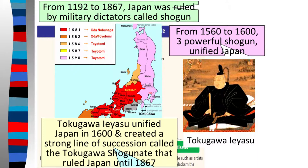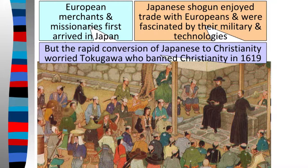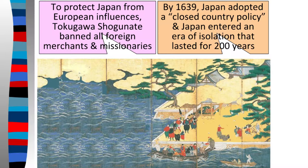This all starts when different European merchants and missionaries began to arrive in Japan. While the Shogun enjoyed trading with the Europeans, that rapid conversion of Japan to Christianity — where missionaries are coming in just to convert people — really worried Tokugawa Ieyasu. That's what led him to ban Christianity in 1619, and then later ban all foreign merchants and missionaries, pretty much completely closing off Japan to the rest of the world with a closed country policy.